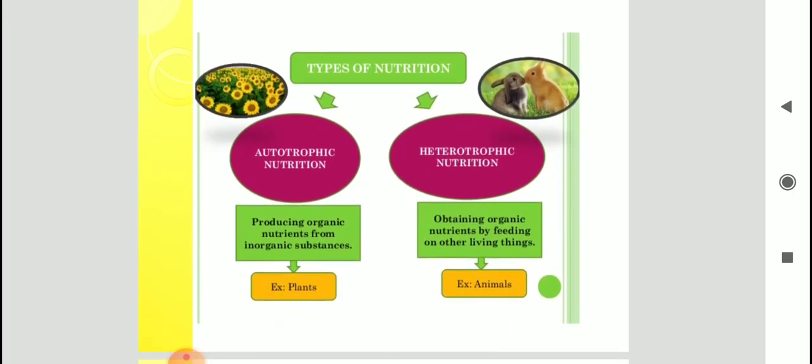See children, autotrophic nutrition. If I break this word autotrophic, auto means self and trophos means nutrition. So autotrophic means self-nutrition. This mode of nutrition means in which the living organism can produce its own food. So the example is green plants because they can do photosynthesis and they can utilize carbon dioxide and water and convert them into organic substance. So what is autotrophic nutrition? It means producing organic nutrients from inorganic substances and green plants have the ability to do so.